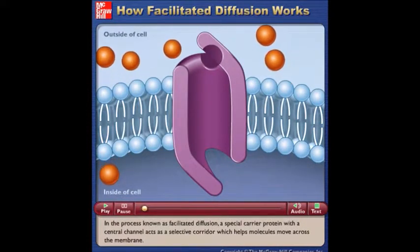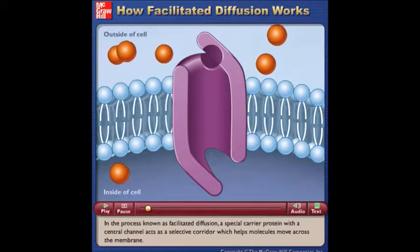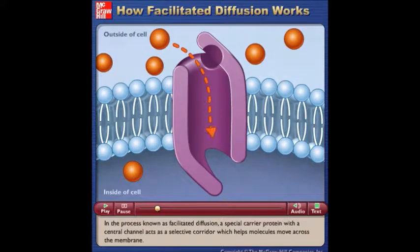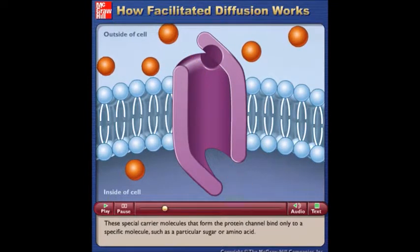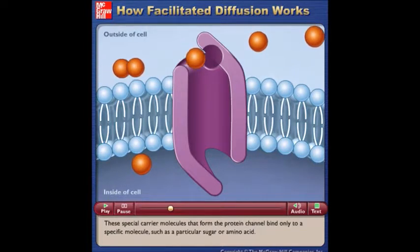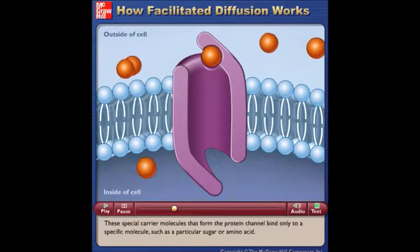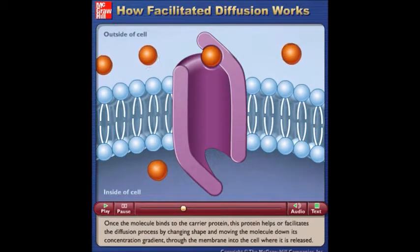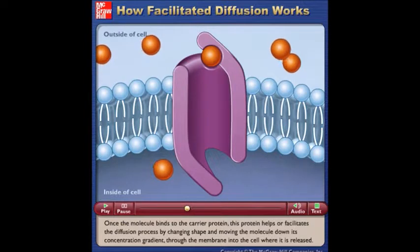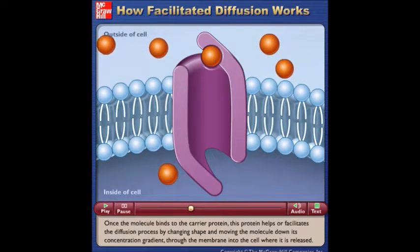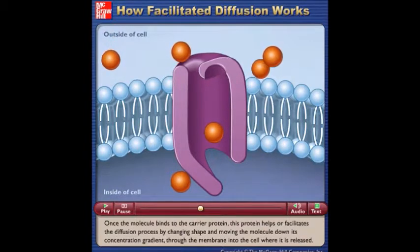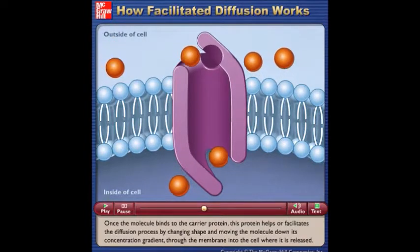In the process known as facilitated diffusion, a special carrier protein with a central channel acts as a selective corridor which helps molecules move across the membrane. These special carrier molecules that form the protein channel bind only to a specific molecule, such as a particular sugar or amino acid. Once the molecule binds to the carrier protein, this protein helps or facilitates the diffusion process by changing shape and moving the molecule down its concentration gradient through the membrane into the cell where it is released.